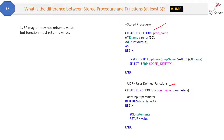The first difference is: a stored procedure may or may not return a value, but a function must return a value. A function will always return a value, whereas a stored procedure may or may not return an output. This is the first difference.